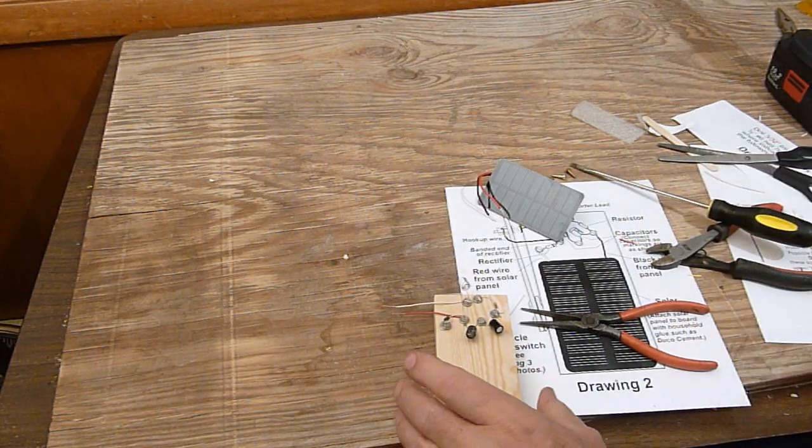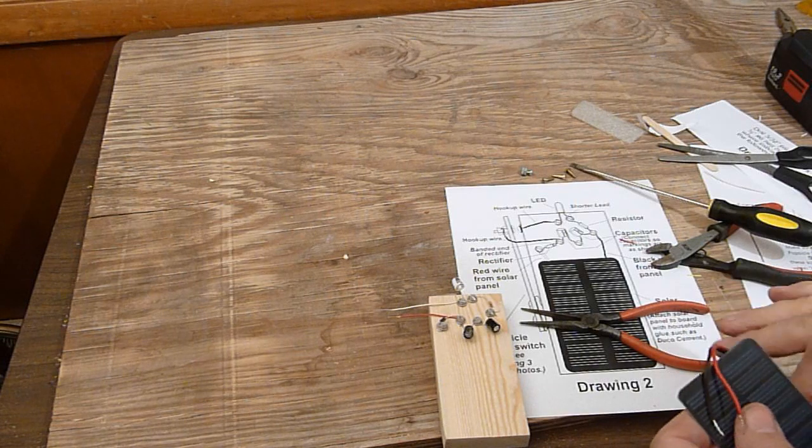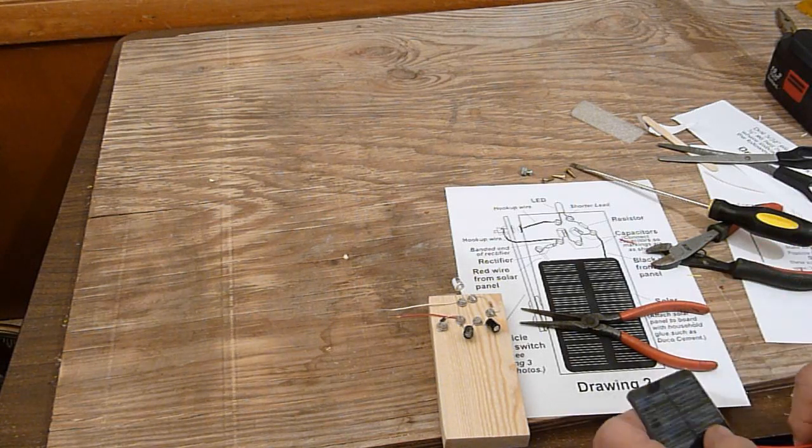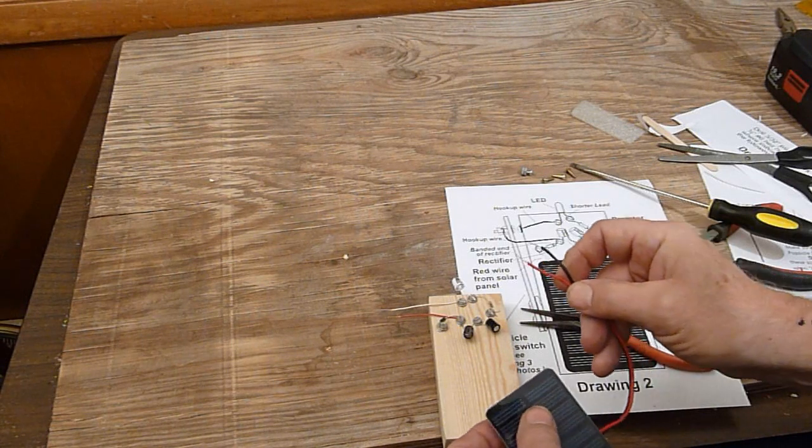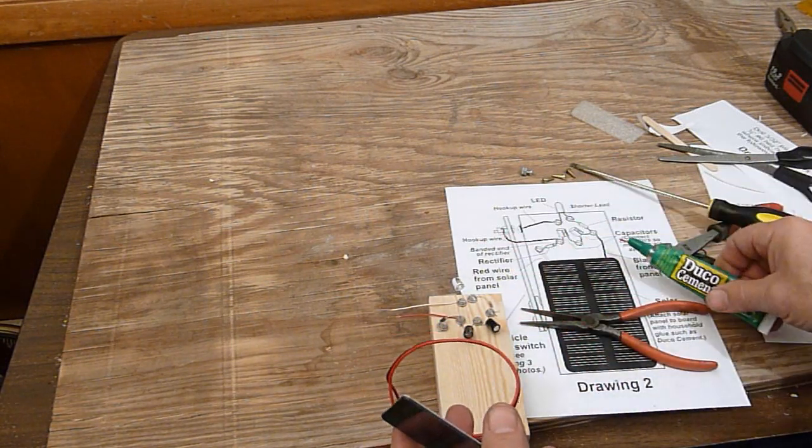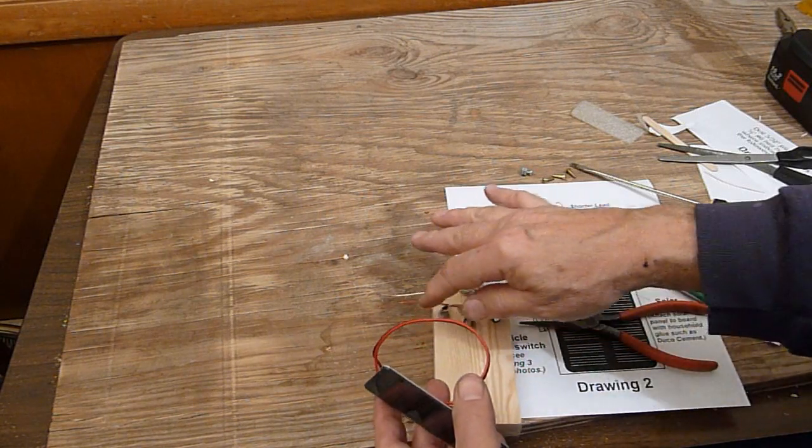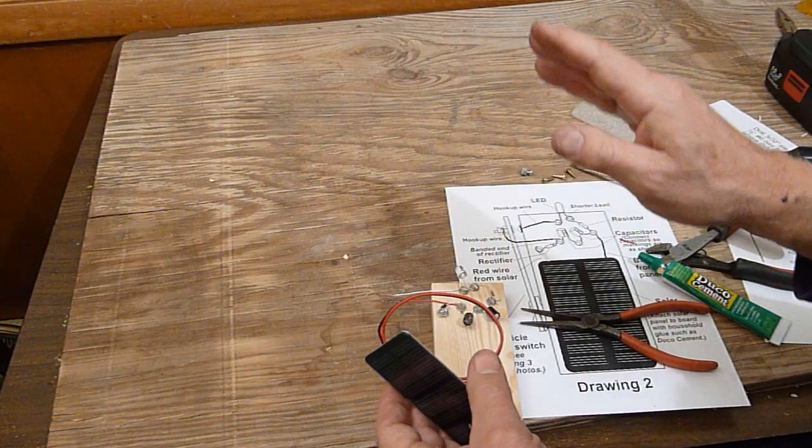We're almost done with the wiring of this. What we're going to do first is going to connect these wires. Then we're going to have to glue this down. And then the last step is to make the switch here and hook it up.